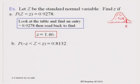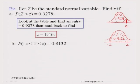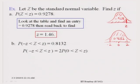Now, if you are asked to find Z such that the central area between minus Z and Z is 0.8132, we use the symmetry of the standard normal curve about 0. We can write this central area as twice the area between 0 and Z.